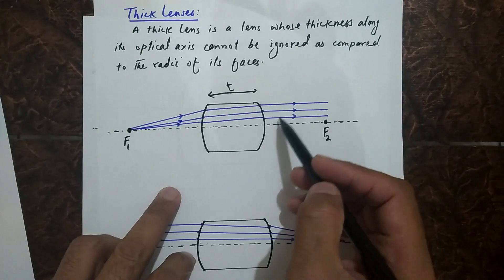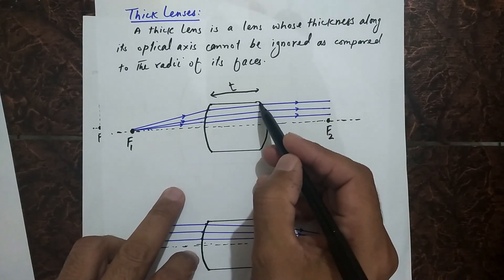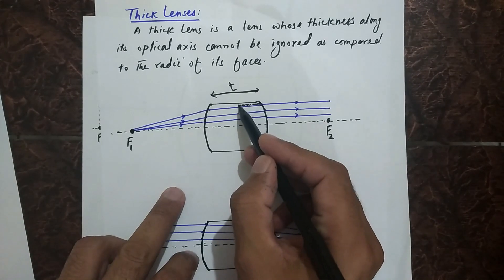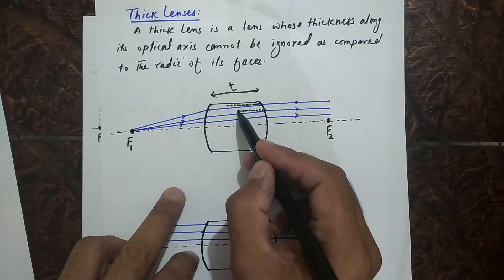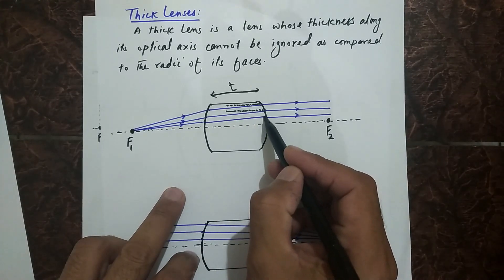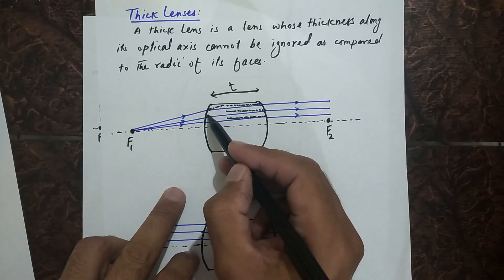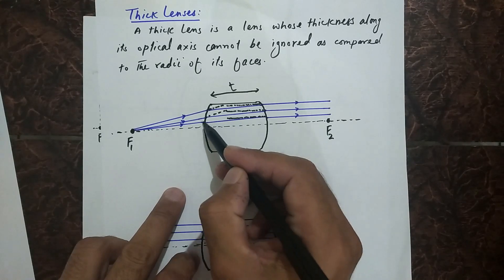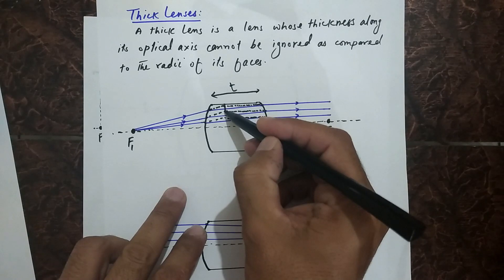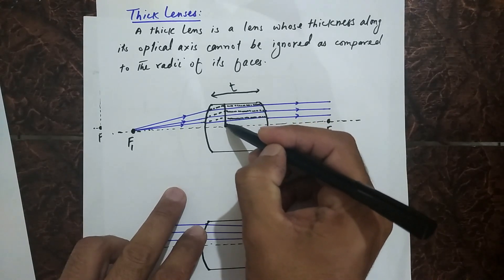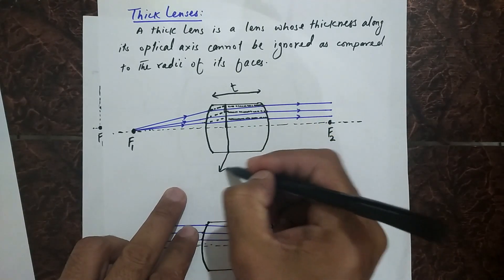After refraction through both faces of the lens, the rays are traveling parallel to the optical axis. If we extend both the emergent rays in the backward direction and the incoming rays in the forward direction, they meet each other at a point. The plane which contains these points is known as the principal plane.